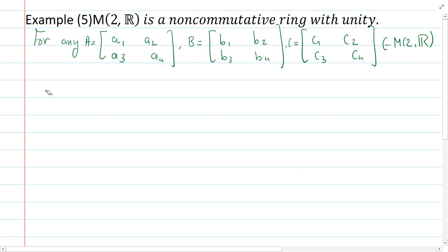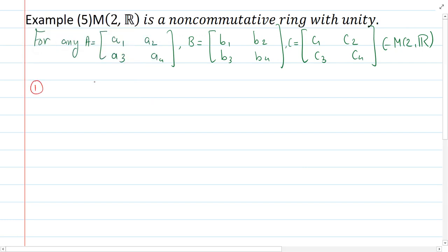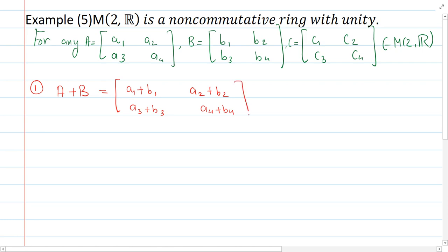Let's start proving that M₂(ℝ) is a ring. The first property is binary under addition. I've considered two arbitrary elements A and B, and A + B is computed coordinate-wise: it equals the matrix with entries a₁+b₁, a₂+b₂, a₃+b₃, a₄+b₄. Since these entries are real numbers and the result is a 2×2 matrix, it is again an element of M₂(ℝ). So the first property — closure under addition — is true.